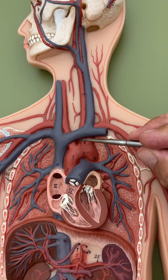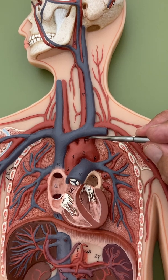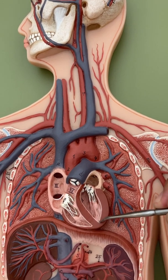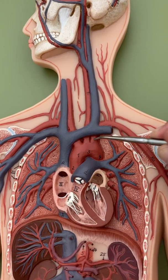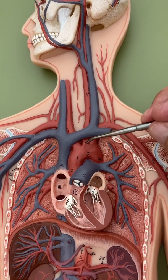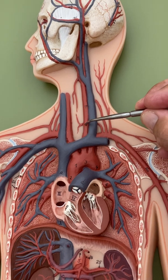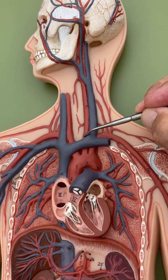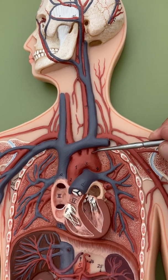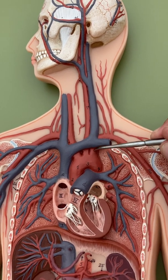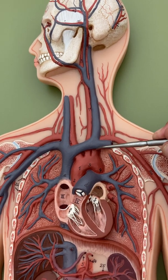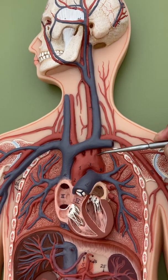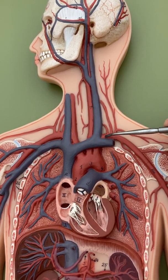On the left side of the aortic arch — we know this is the left side because here's the tip and apex of the heart, which is on the left — we have a branch going up the neck to the head called the common carotid. We also have a branch called the left subclavian, which goes to the left arm. It's called the subclavian because it goes under the clavicle.